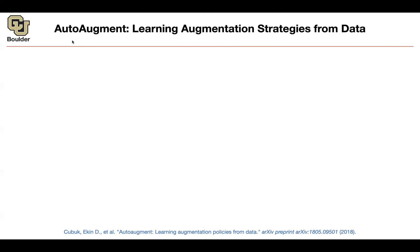We know that data augmentation matters a lot. It's going to double or triple the size of your data, and the more data you have, the more your neural networks are going to like it. Intuitively, what data augmentation does is teach your model about the invariances in your data. For instance, random cropping tells your model that if I take an image of a dog and shift it right, left, up, down, it should still be classified as a dog. That's what translation invariance is doing, and you want to discover it.